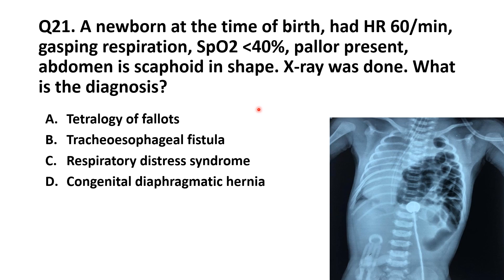So what is the diagnosis? It is a clear-cut diagnosis — the newborn is suffering from congenital diaphragmatic hernia. The abdomen shows a whiteout; no bowel loops are visible there, and all the bowel loops are visible in the left lung field. The trachea is shifted toward the opposite side and the right lung field is also not clearly visible.